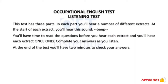The educational English test has three parts and in each part you hear a number of different extracts. At the beginning of the test you will hear a beep sound. You have time to read the questions before you hear the extracts. You will hear each extract once only. You have to complete your answers as you listen. At the end of each test you will be given two minutes to check answers.